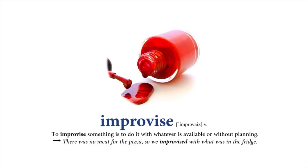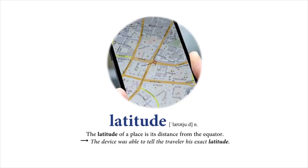Latitude: The latitude of a place is its distance from the equator. The device was able to tell the traveler his exact latitude.